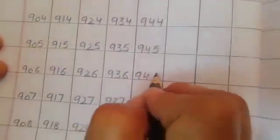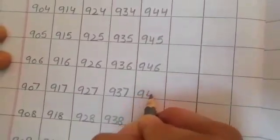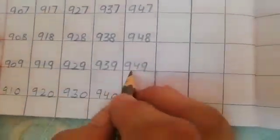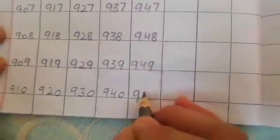946, 947, 948, 949. Then what comes after 949? 950.